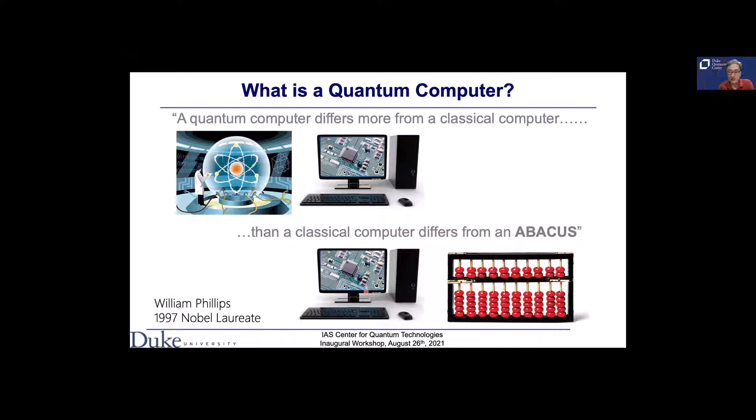All of you probably know the benefits of quantum computers. I'm going to use the example of Shor's algorithm, the factoring problem, to highlight the power. This work was presented by Rod Van Meter and others more than 15 years ago. They analyzed the time it takes to factor an n-bit integer as a function of problem size on a log-log scale. The NFS, the number field sieve algorithm, is the best known classical algorithm.